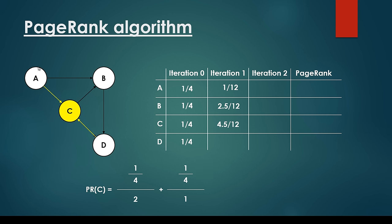What about C? We consider all websites pointing to C. That's 1/4 divided by 2 for node A, and 1/4 divided by 1 for node D, since node D has just a single outgoing link. What about node D? We consider all websites pointing to D — node C and node B. The page rank of C in the previous iteration is 1/4 divided by 3, because C has 3 outgoing links. Plus 1/4 is the page rank of B in the previous iteration, divided by 1 since B has just a single outgoing link. So the overall page rank for website D in the first iteration is 4/12.